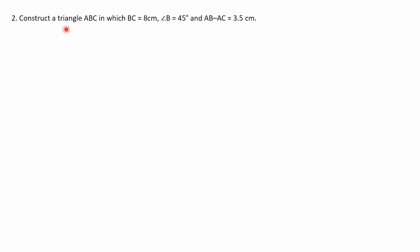Question number two: Construct a triangle ABC in which BC is equal to 8 cm, angle B is equal to 45 degrees, and AB minus AC equals 3.5 cm. One side BC is 8 cm, one angle B is 45 degrees, and the relation between AB and AC — AB minus AC — is 3.5 cm.